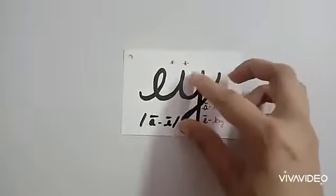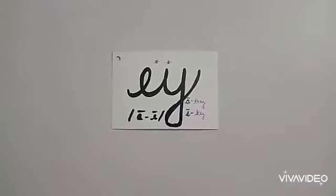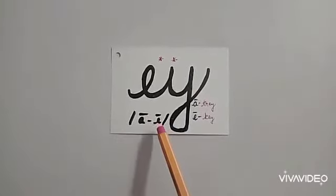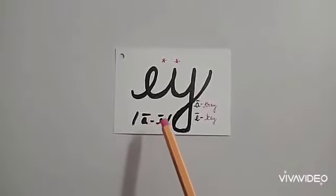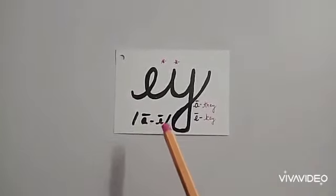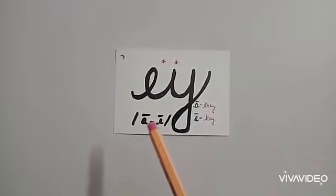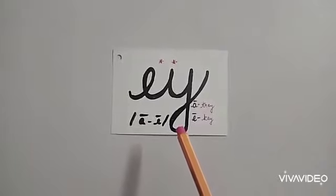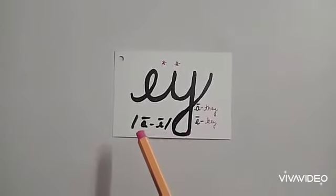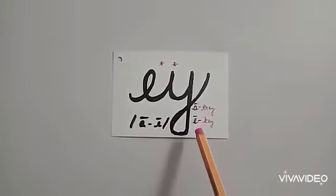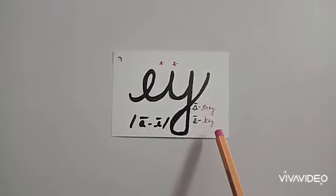Moving on to the next phonogram. This phonogram also has two sounds: A, E, which may be used at the end of English words. Repeat after me: A, E, which may be used at the end of English words. Let's see the examples — A, as in they. E, as in key. Is it clear?